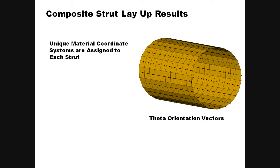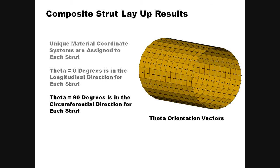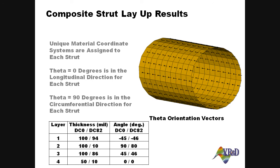For model consistency, each strut has its own material coordinate system defined. These coordinate systems define the longitudinal length of each strut as theta equals 0 degrees and the circumferential direction as theta equals 90 degrees. Since the composite layup is symmetric, only 4 of the 8 plies are shown. The total thickness of all plies changes from 700 mil to 400 mil, which is the constrained lower bound. Continuous design variables are used to modify the ply thickness, but discrete design variables — which enforce prescribed thickness increments — are also an option in Genesis.